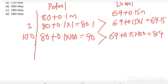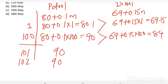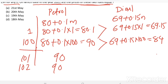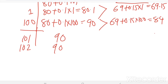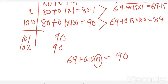Even after 100 days, the price of petrol is more than the price of diesel. After 100 days, the price of petrol remains constant — on the 101st day, 102nd day, the price of petrol remains constant. While the price of diesel keeps increasing by the function 69 plus 0.15n. We need to find n such that 69 plus 0.15n equals 90, i.e., when the price of diesel becomes equal to that of petrol.